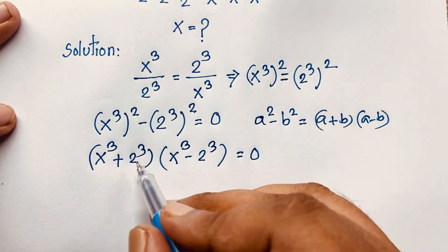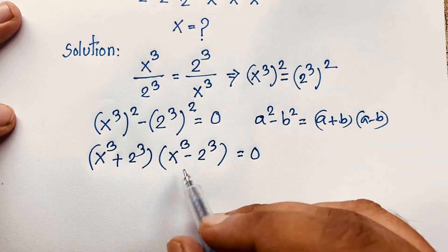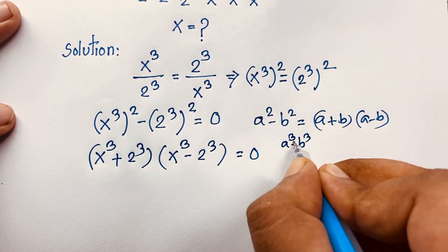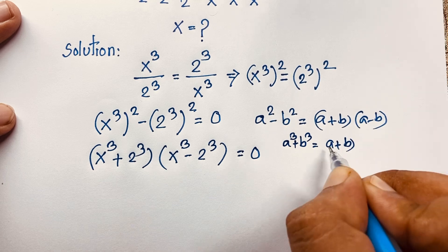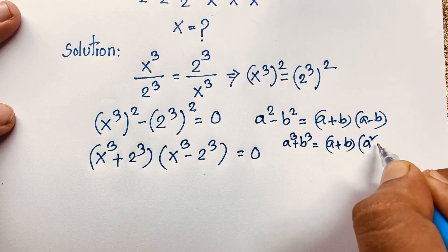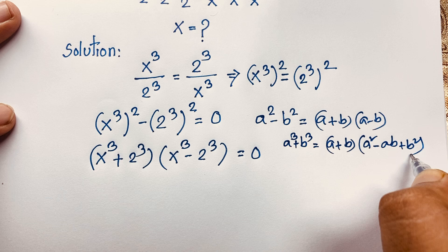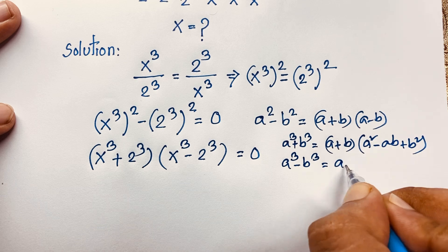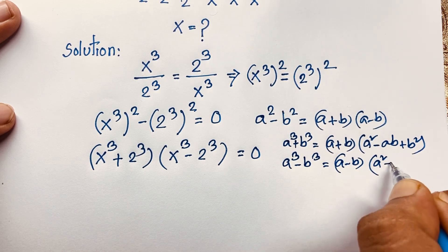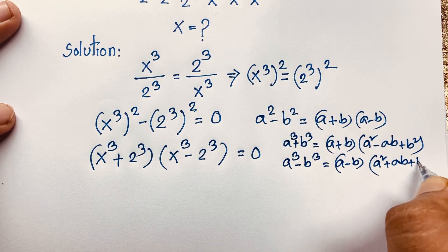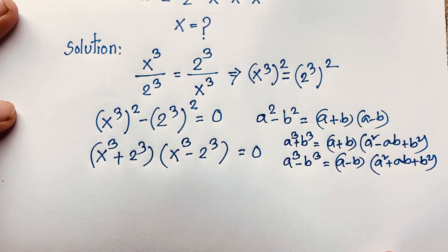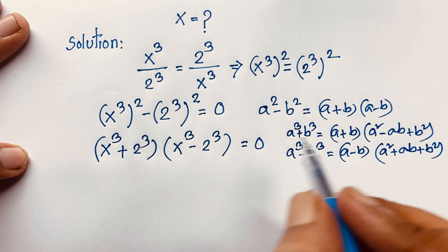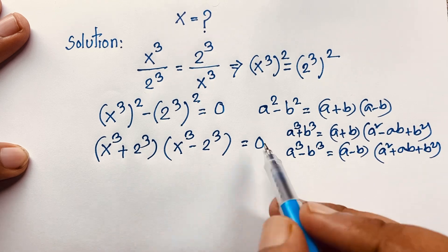Now, for sum and difference of cubes: a³ + b³ = (a + b)(a² − ab + b²), and a³ − b³ = (a − b)(a² + ab + b²). I will apply these formulas to each factor, setting each equal to 0.